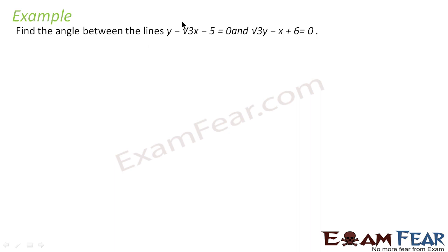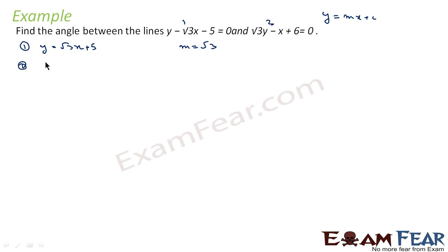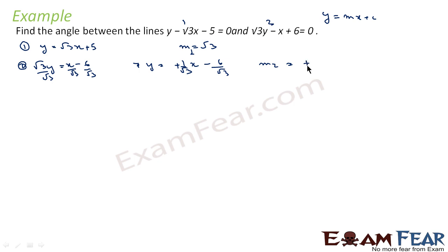In this question we are asked to find the angle between line 1 and line 2. To find the angle, let's find the slopes by converting to slope form. For the first equation: y equals minus root 3 times x plus 5, comparing with y equals mx plus c, we get m1 equals root 3. For the second equation: root 3 y equals x minus 6. Dividing through by root 3, we get y equals (1 by root 3) x minus 6 by root 3. So m2 equals 1 by root 3.